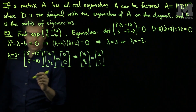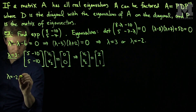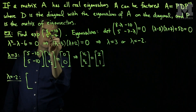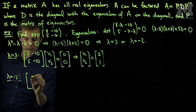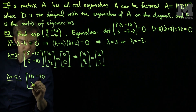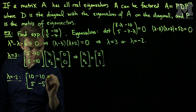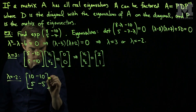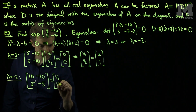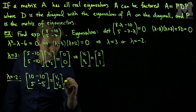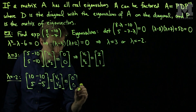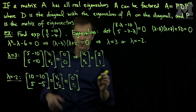Let's find the second eigenvector corresponding to λ = -2. Subtracting -2 from the main diagonal gives [10, -10; 5, -5] [V1; V2] = [0; 0]. It should be clear that we can choose V1 = 1 and V2 = 1 as the eigenvector.